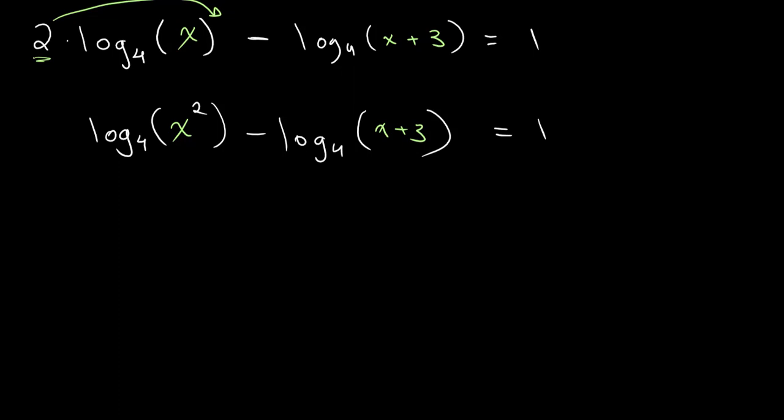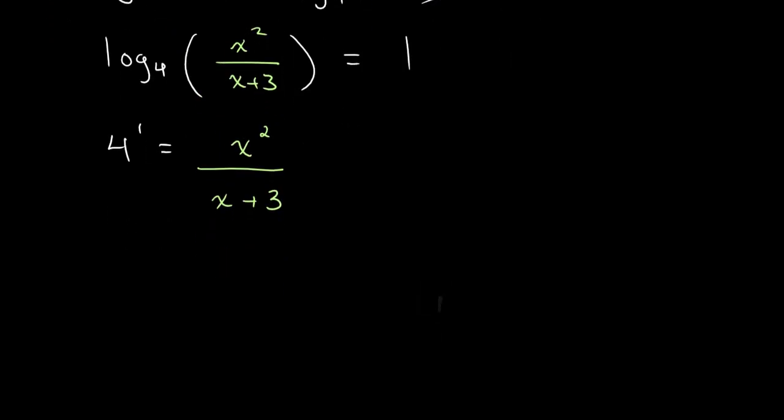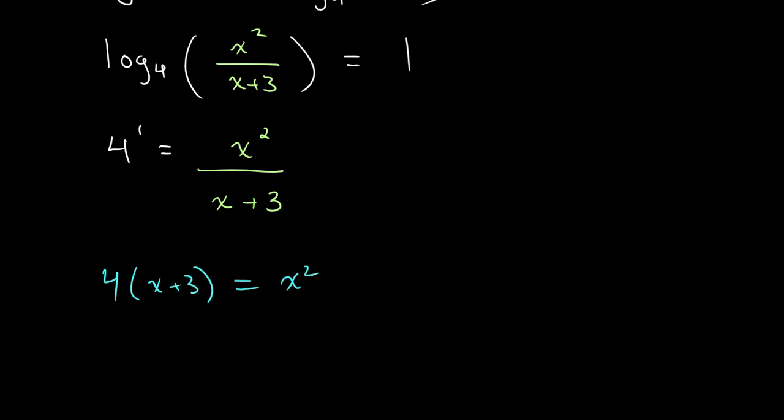So now we can apply our division law. We get log base 4 of x squared over x plus 3 equals 1. And remembering what logs actually mean, that means that 4 to the power of 1 is equal to x squared over x plus 3. And all that's left now is just some algebra. We can say, so let's say 4 times x plus 3 is equal to x squared, 4x plus 12 is equal to x squared.